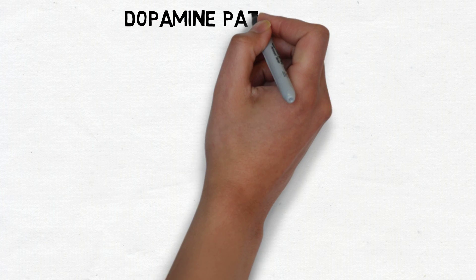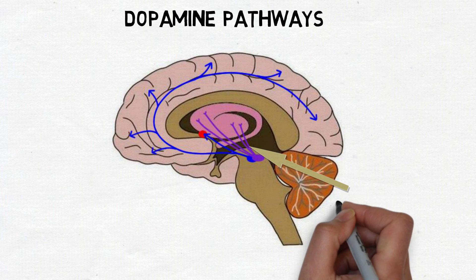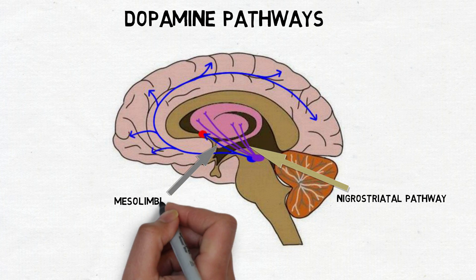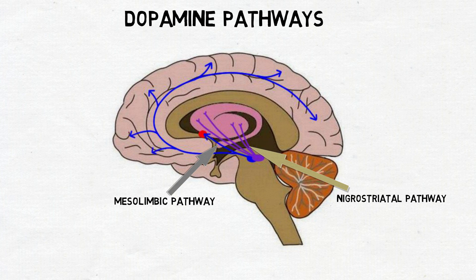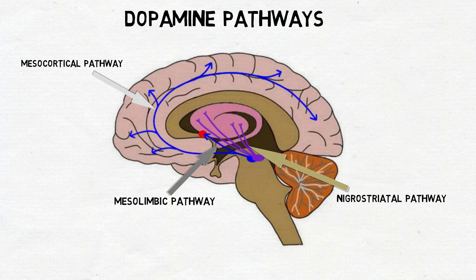There are several major dopamine pathways that carry dopamine from these areas of concentration to other parts of the brain. Some of the largest are the mesostriatal or nigrostriatal pathway, which stretches from the substantia nigra to the striatum; the mesolimbic pathway, which stretches from the ventral tegmental area to the nucleus accumbens and other limbic structures; and the mesocortical pathway, which stretches from the ventral tegmental area throughout the cerebral cortex.